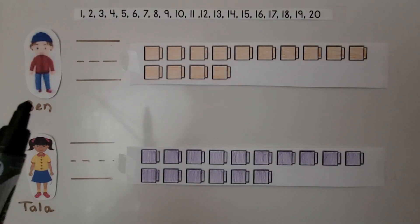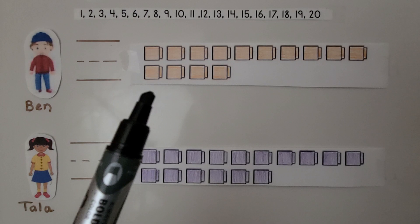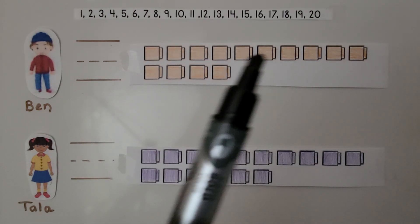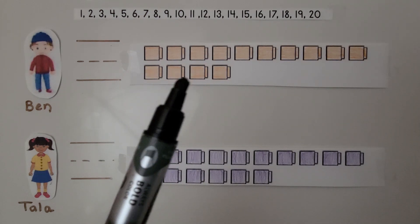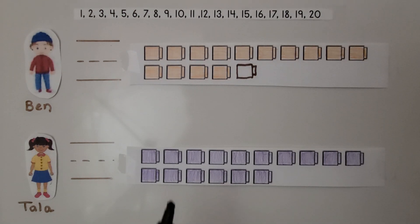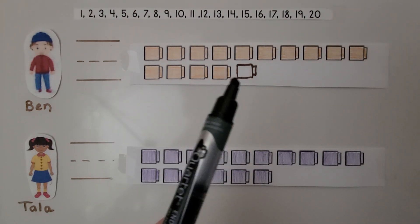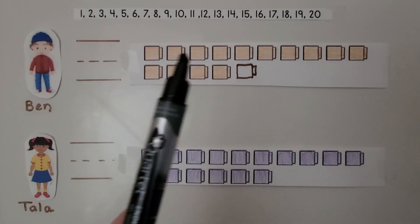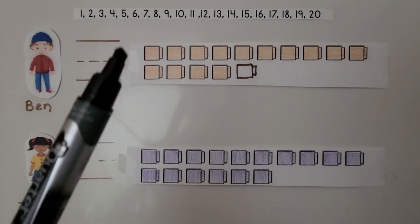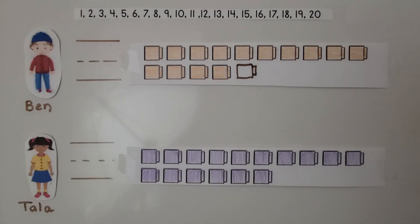Here's Ben. Ben has a number of orange cubes one greater than 14. We see 10 ones and 4 ones — this is 14. If Ben has cubes one greater than 14, we can draw one more to show how many cubes Ben has. That's one more than 14. We can count all the cubes, or we can see that he has 10 ones and 5 ones, which is 15.